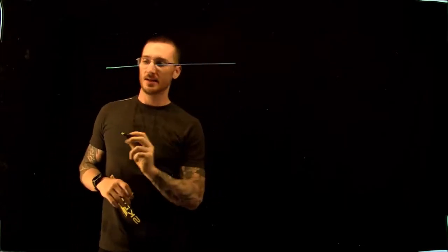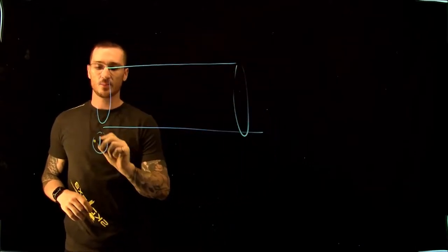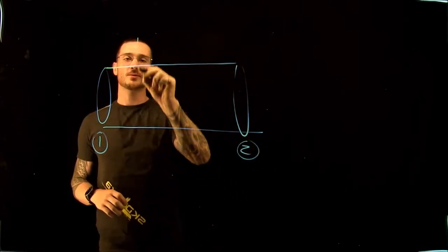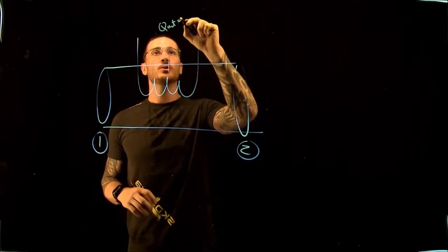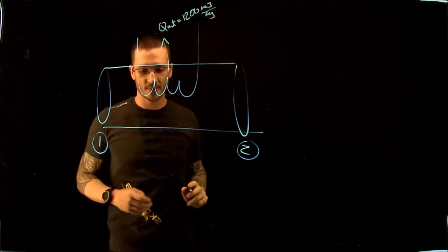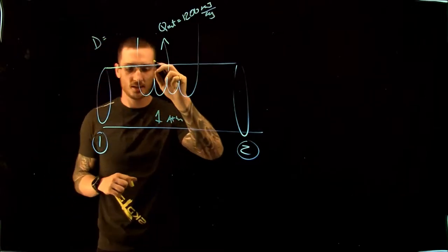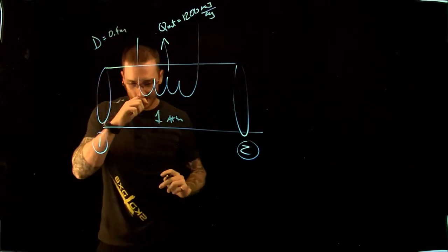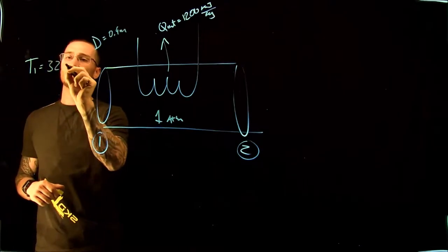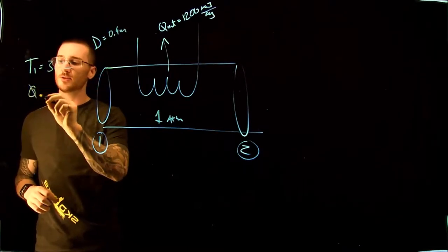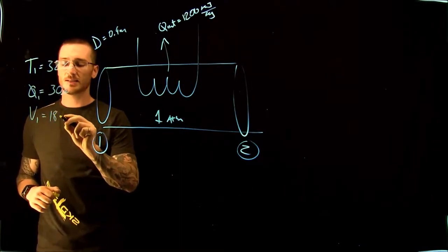The sketch looks something like this. We basically have an inlet and an exit — we'll call the inlet point 1 and the exit point 2. We have some sort of coil here, and they tell us that Q_out equals 1200 kilojoules per kilogram, the system is at one atmosphere, the diameter of the cross-section is 0.4 meters, the temperature at point 1 is 32°C, the relative humidity at point 1 is 30%, and the velocity at point 1 is 18 meters per second.